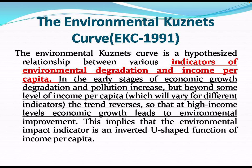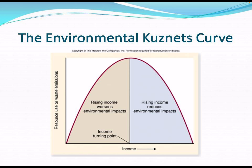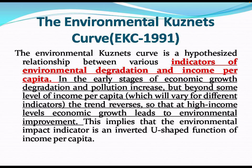The Environmental Kuznets Curve hypothesizes the relation between various indicators of environmental degradation and income per capita. When early-stage economic growth happens, degradation and pollution increase, but beyond some level of per capita income the trend reverses, so that higher income levels lead to environmental improvement. The environmental impact indicators follow an inverted U-shape function of income per capita.